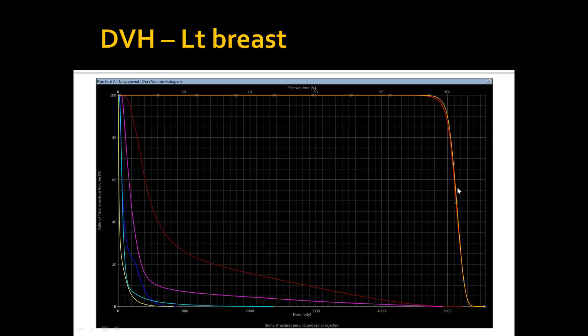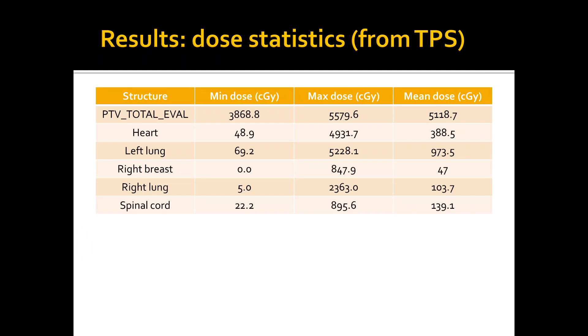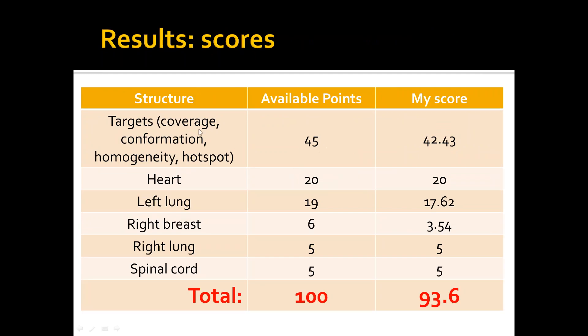These are the dose statistics from the treatment planning system. I just posted it here for your reference. You can find the minimum dose, the maximum dose, and the mean dose per structure. And here are my results. So out of available 45 points for the target, including coverage, conformation, homogeneity, and hotspot, I achieved 42.4. And out of 20 for the heart, I achieved 20. 17.6 out of 19 for the left lung. And the right breast was my toughest organ to spare. I achieved 3.5 only. And right lung and spinal cord, I achieved them, and the total score is 93.6.